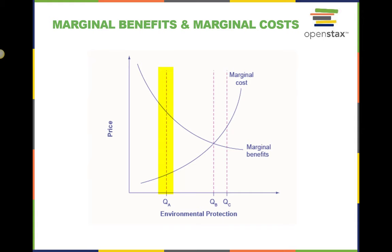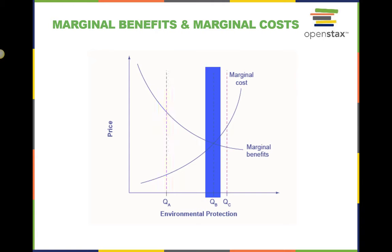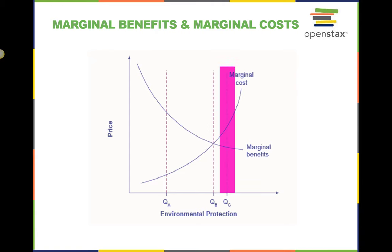However, as the extent of environmental protection increases, the cheap and easy ways of reducing pollution begin to decrease, and more costly methods must be used — the marginal cost curve rises. Also, as environmental protection increases, the largest marginal benefits are achieved first, followed by reduced marginal benefits. As the quantity of environmental protection increases to say QB, the gap between marginal benefits and marginal costs narrows. At point QC, the marginal cost will exceed the marginal benefits. At this level of environmental protection, society is not allocating resources efficiently, because too many resources are being given up to reduce pollution.